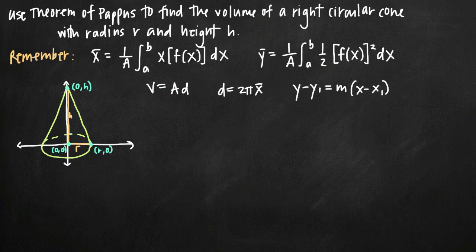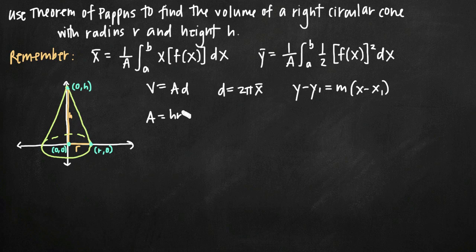Now we need to find area, and finding area is really easy — it's just the area of a triangle. The area of a triangle is base times height divided by two, because we're finding half the area of a rectangle. So area equals h times r divided by two, giving us hr/2.